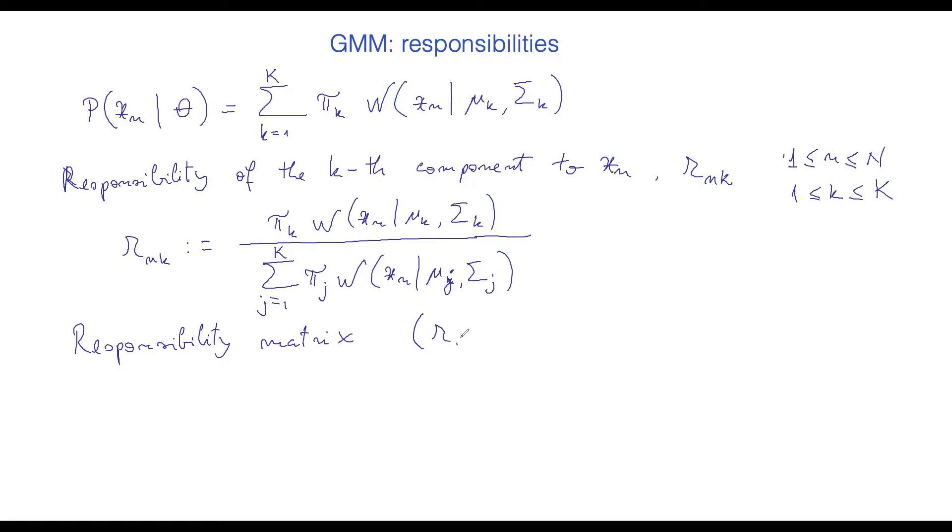It's going to be made of all these responsibilities, so it's going to have n rows and k columns. And if I take the sum over one row, the sum over a row is always one. And that's because we are normalizing this thing. And so when we take the contribution of all the components to a data point and normalize, this is always going to be one.